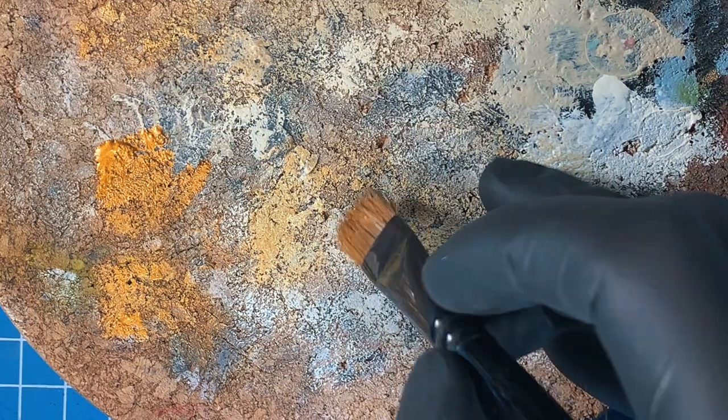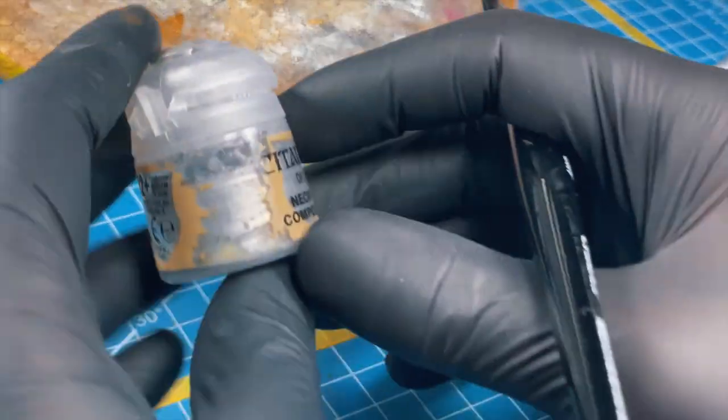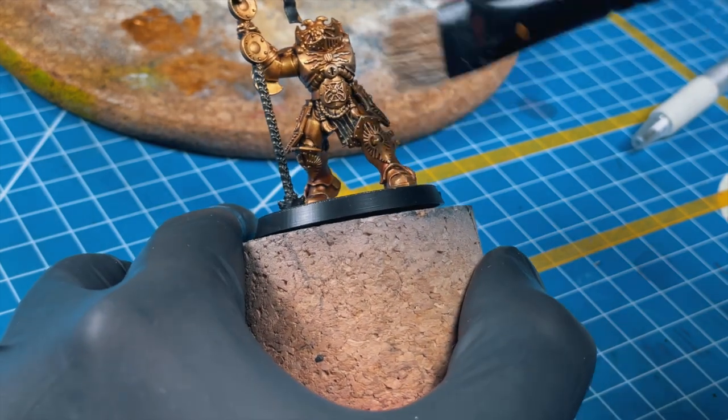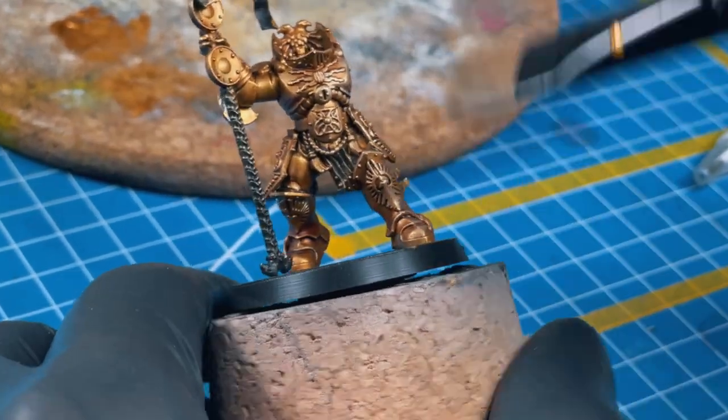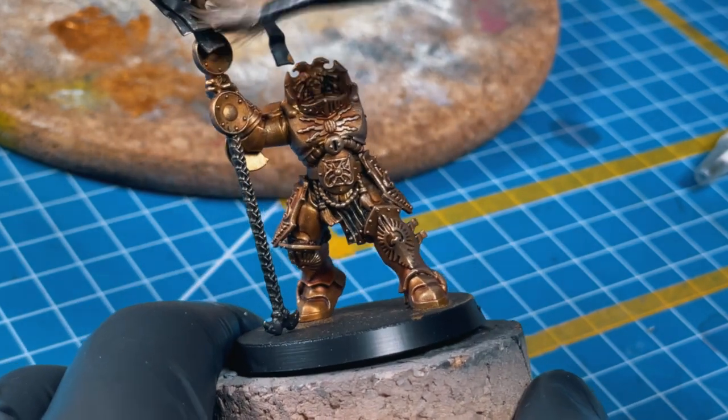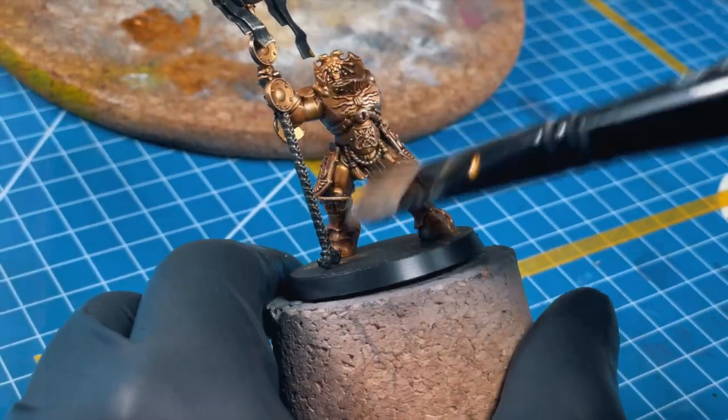Now it's time for the final stage. This is the most gentle dry brush we'll do. Just get some Necron Compound on your dry brush and apply it only in the most raised corners and in the parts that will be naturally scratched—worn armor.